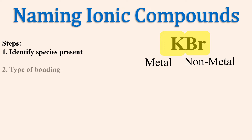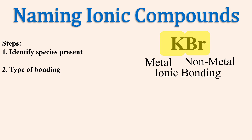Next, identify the type of bonding. Bonding between metals and non-metals is called ionic bonding, or bonding between ions, which are charged particles.